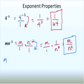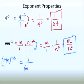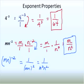If the problem said (mn) in parentheses raised to the negative 2 power, then it would be 1 over mn squared, which you could write as 1 over m squared n squared. So be very careful about what is being raised to a power — whether it's a single variable or a whole quantity.